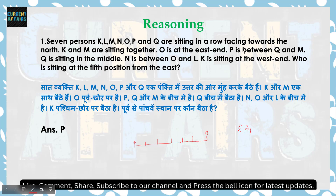K और M यहाँ है। Q का position क्या है — M का हमें नहीं पता। P बीच में है। Next, Q is sitting in the middle — Q middle में है, यानि कि Q यहाँ है, Q का भी position fix हो जाता है। N is between O and L — जो N है वो O और L के बीच में है। L और O में हमें नहीं पता कौन left में है, कौन right में है।